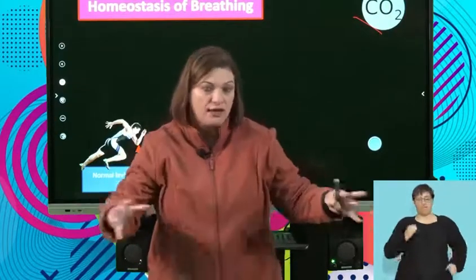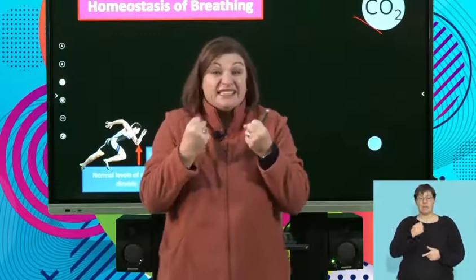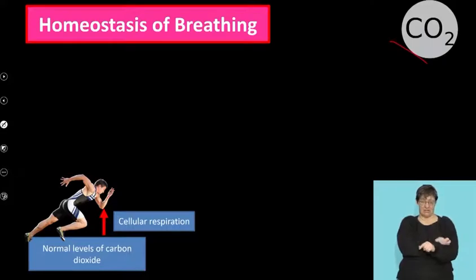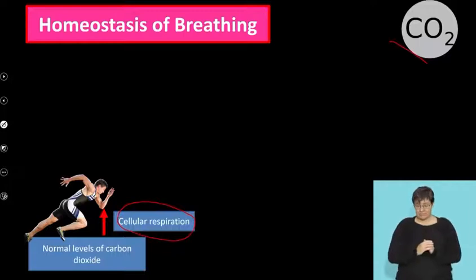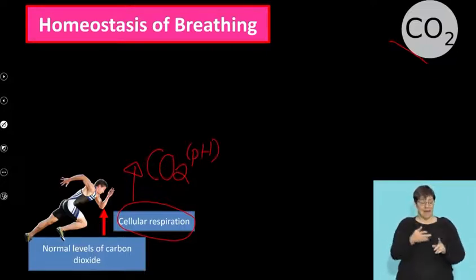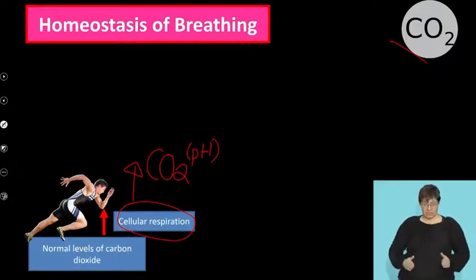Picture this: you've been playing soccer, gone for a run, played netball or rugby. What happens afterwards? You're exercising, your body needs energy, so cellular respiration increases. And what does an increase in cellular respiration mean? It means there's an increase in carbon dioxide. As I said, carbon dioxide changes the pH of the body, and I cannot have that — it could be detrimental to the balance.